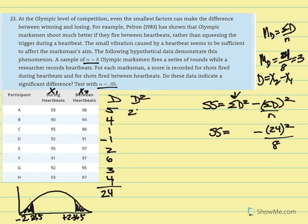So 5 squared is 25. 4 squared is 16. 1 squared 1. Negative 1 squared 1. 2 squared is 4. 6 squared 36. 3 squared 9. 4 squared 16. So now in your calculator take the summation of these d values that have been squared.